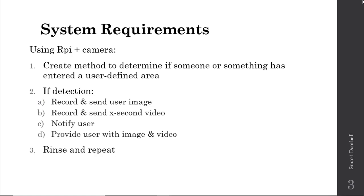We also want to notify the user, and there are multiple ways to do that. We'll look at two: we'll send an email from the Raspberry Pi using an Internet of Things approach, and we'll also send a text message to the user using a Twilio account. We'll provide the image via email and upload the video to a Dropbox account.